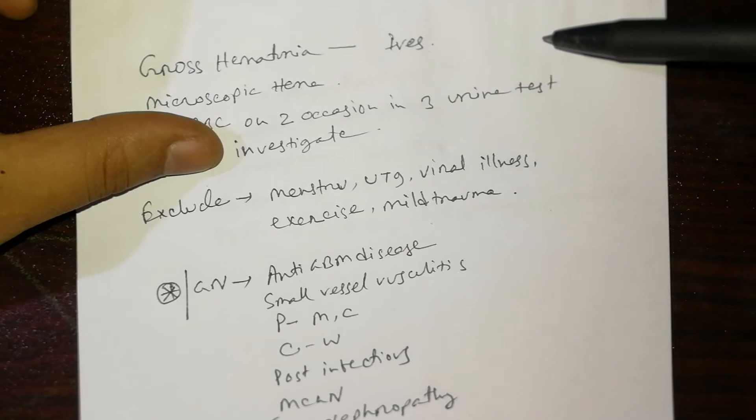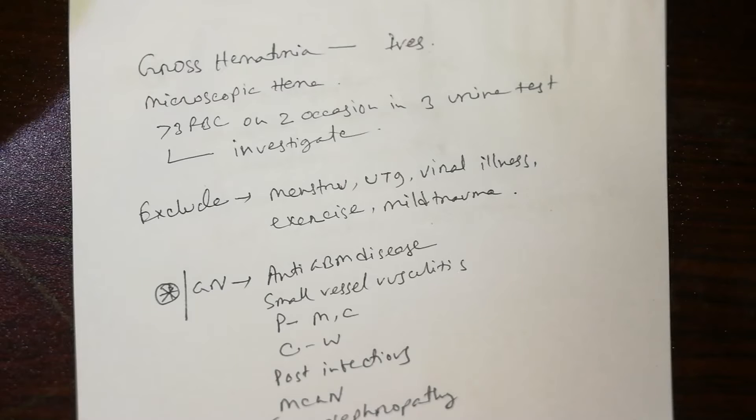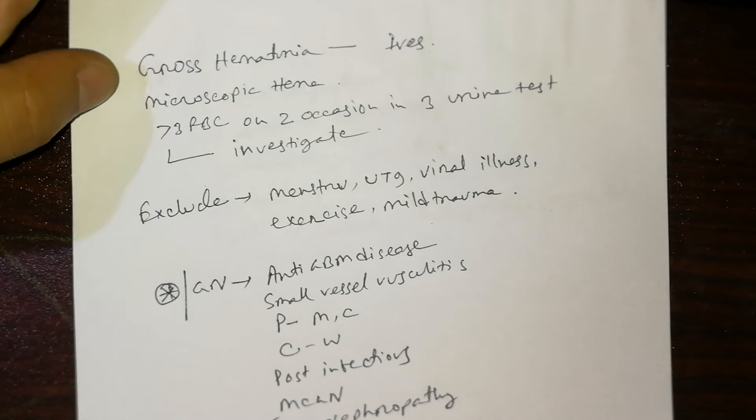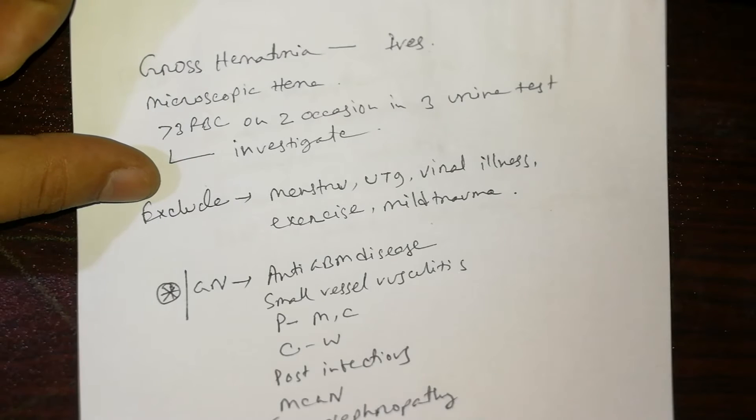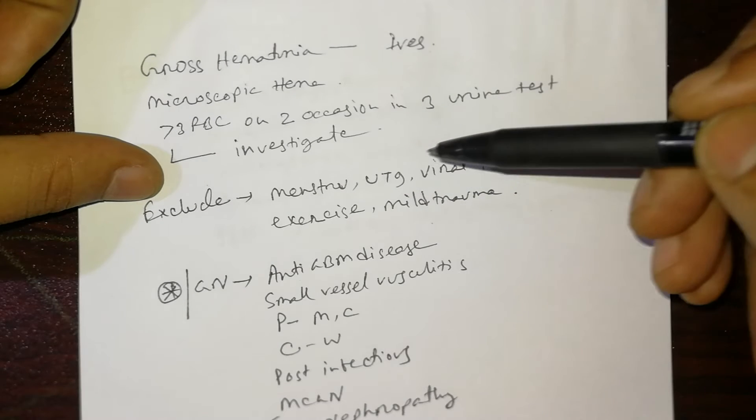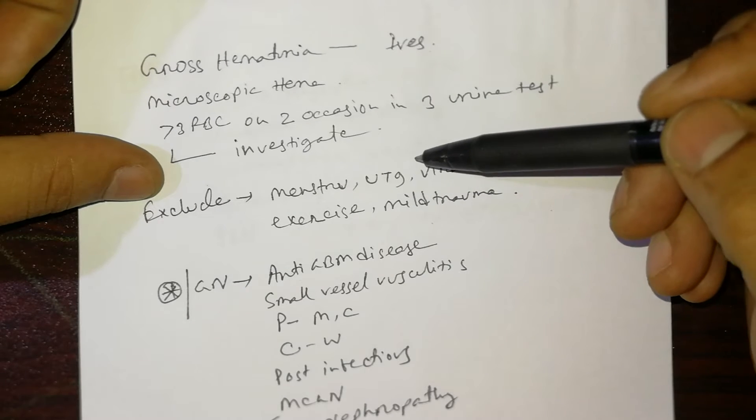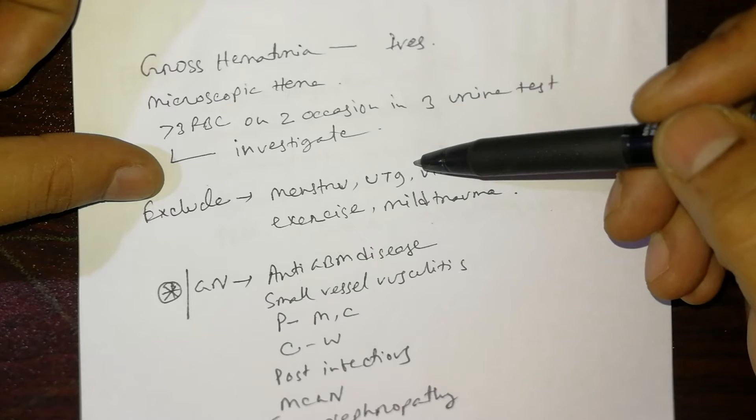If a patient has hematuria, first exclude benign causes such as menstruation, which is easily taken from history, and UTI, which is easily identified from history with symptoms like burning sensation, urgency, frequency, and foul-smelling urine in lower UTI.